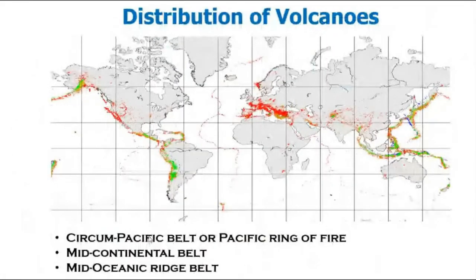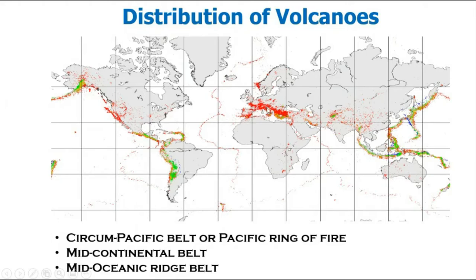Volcanoes are spread across three major belts in the world. The first is the Circum-Pacific Belt, also called the Ring of Fire, which is encircled by very active volcanoes. The second is the Mid-Continental Belt, covering Europe and the Himalayan region. The third is the Mid-Atlantic Ridge Belt, along the west coast of North and South America. These are the major belts of volcanic activity.